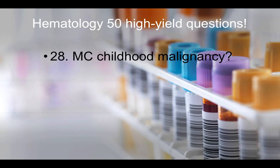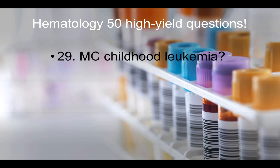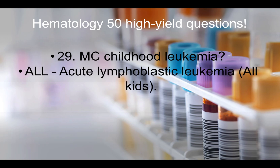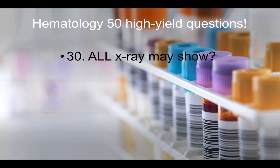Question twenty-eight: Most common childhood malignancy is leukemia. Question twenty-nine: Most common childhood leukemia is ALL — acute lymphoblastic leukemia. The mnemonic: all kids have ALL. Question thirty: ALL x-ray may show a mediastinal mass. If asked about the most common finding on chest x-ray in a child with leukemia, the answer is mediastinal mass.